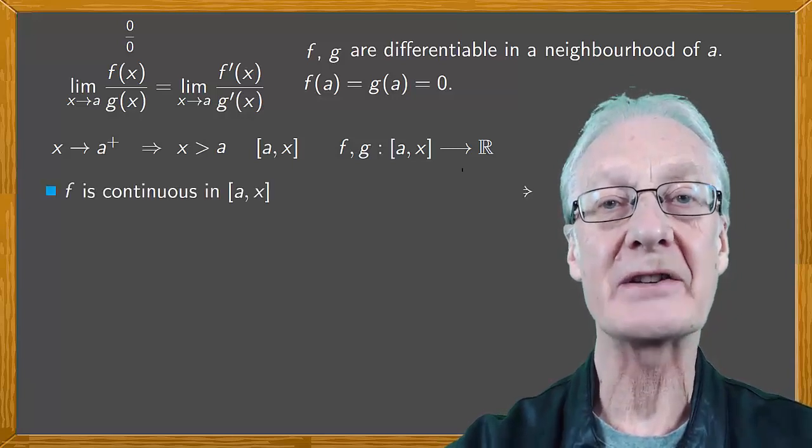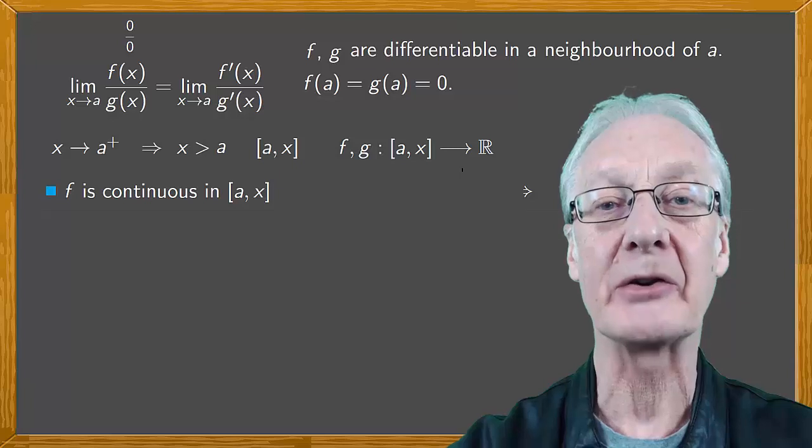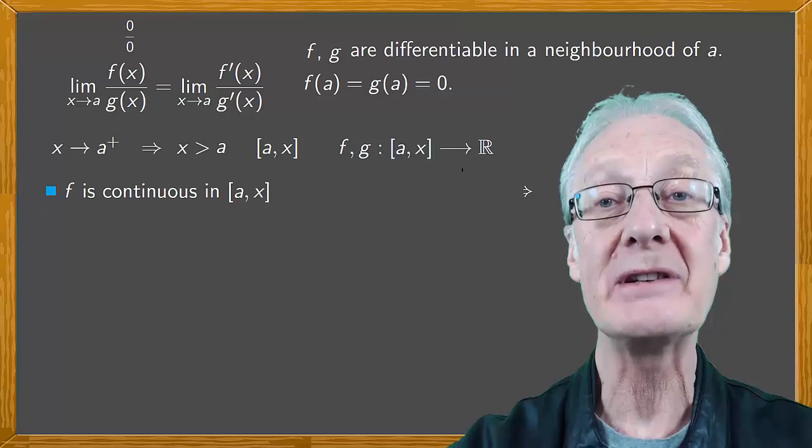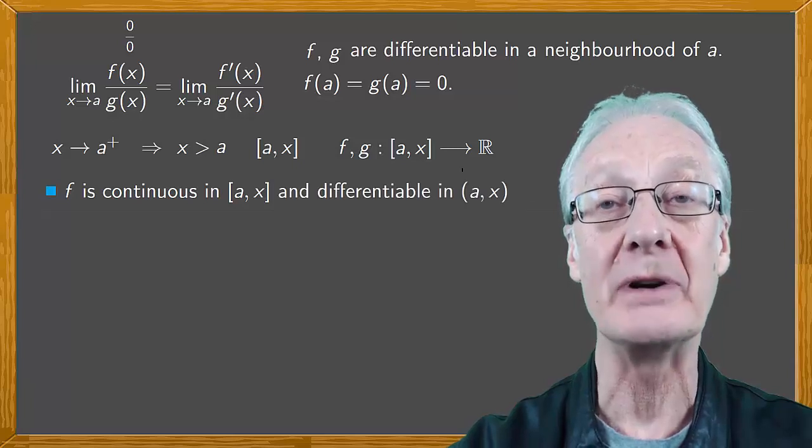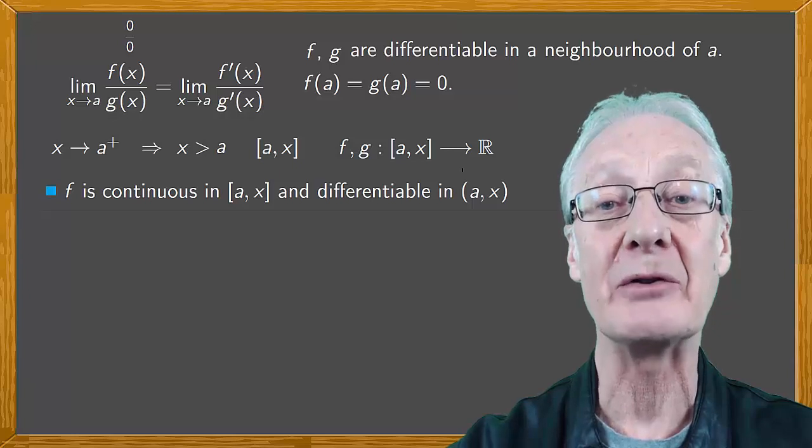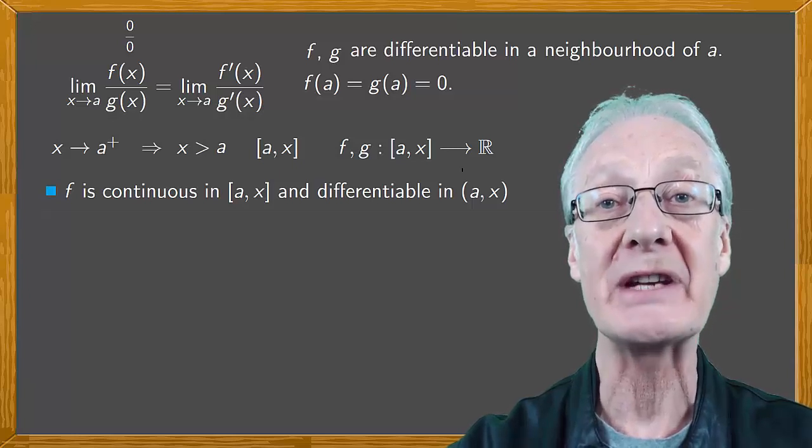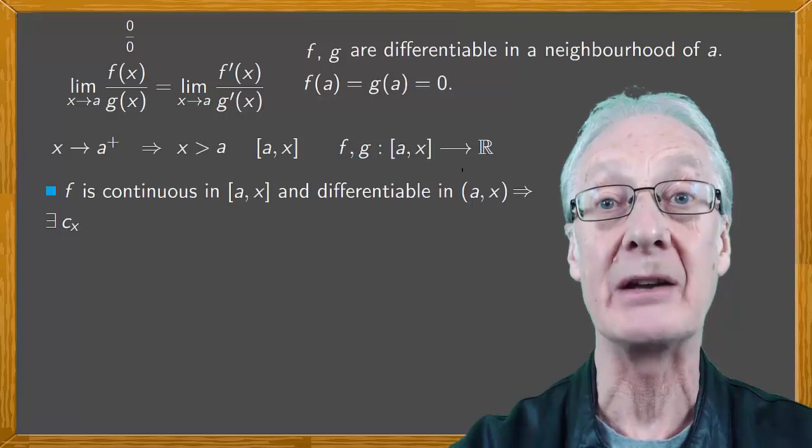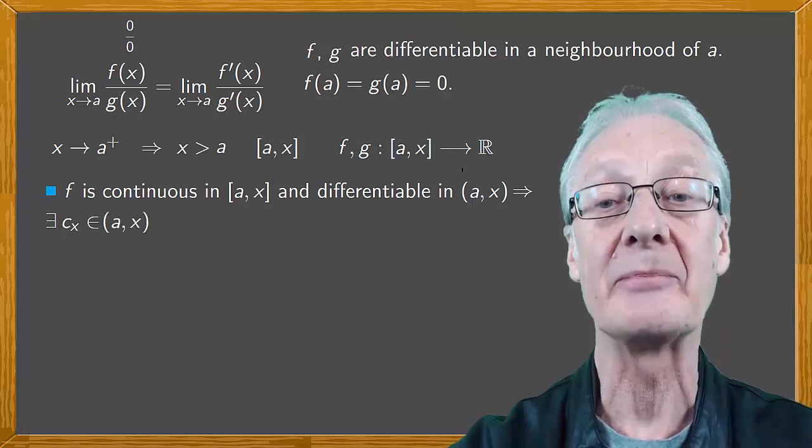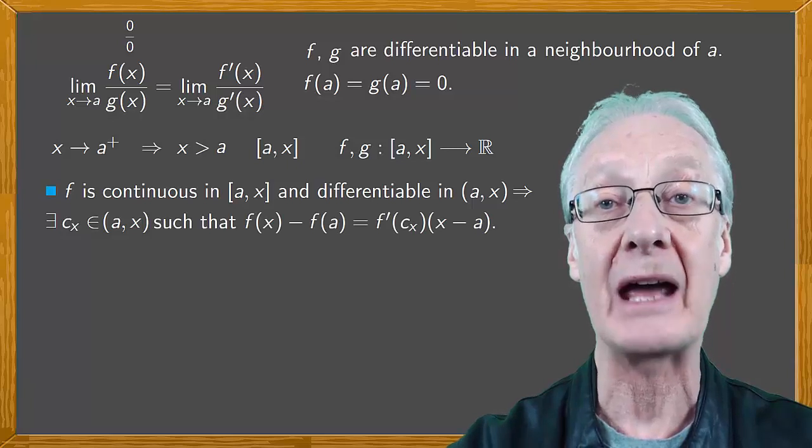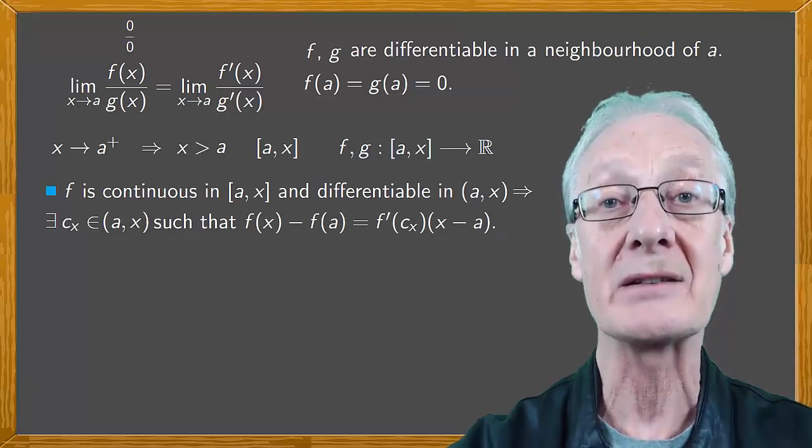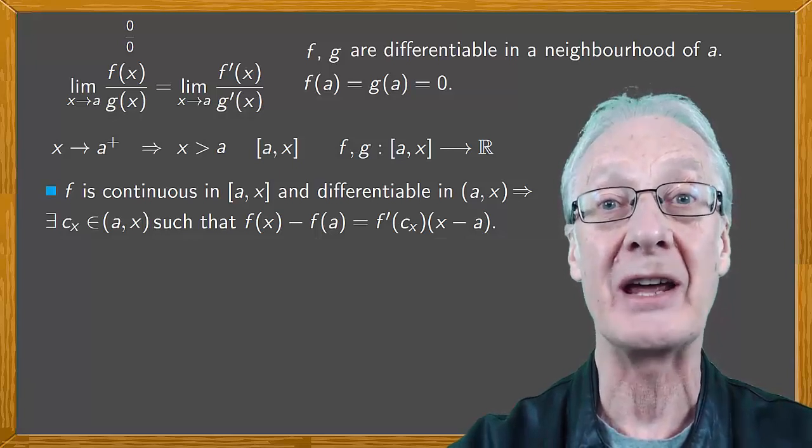Notice that f is continuous in [a,x] because it's differentiable throughout the neighborhood. Also for the same reason it's differentiable in the open interval (a,x). Applying the Lagrange mean value theorem, there's a value c, or let's call it c_x because it depends on x, in the open interval (a,x) such that f(x) minus f(a) equals f'(c_x) times (x minus a).